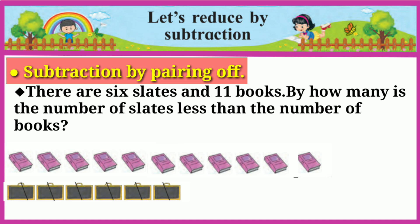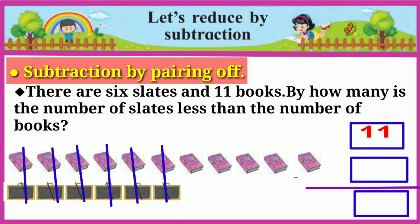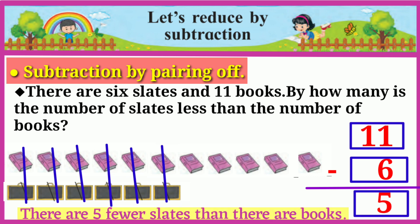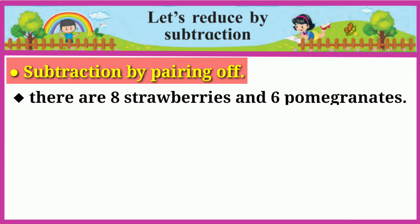There are six slates and eleven books. By how many is the number of slates less than the number of books? Let's subtract by pairing: one, two, three, four, five, and six. Five books are more than slates, meaning there are five fewer slates than there are books.